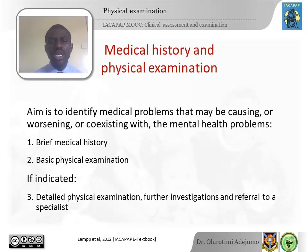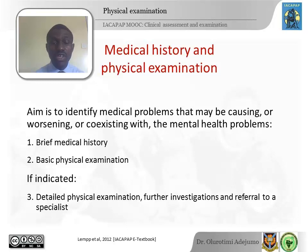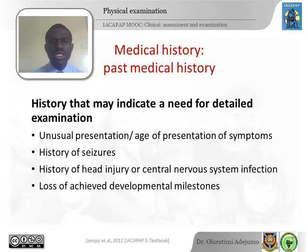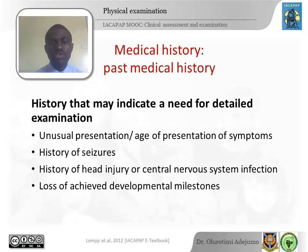Regarding medical history and physical examination, you want to find out about medical problems that may be causing, worsening, or co-existing with the child's presenting problems. You should note items of history that prompt further investigation — things like unusual or early age of presentation of symptoms, since you wouldn't expect auditory hallucinations in a young child of three to seven years old. A history of seizures, significant head injury, infection of the central nervous system, or a child who had normal developmental milestones up to a point and then showed a decline should prompt referral for more detailed examination.